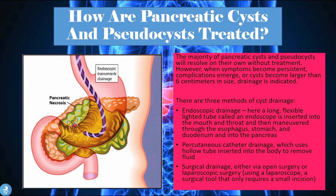There are three main methods of cyst drainage. The first is endoscopic drainage, where a long flexible lighted tube called an endoscope is inserted through the mouth, maneuvered through the esophagus, stomach, and duodenum into the pancreas to puncture, suction, and drain the cyst. The second is percutaneous catheter drainage, using a hollow tube inserted into the body to remove the fluid. The third is surgical drainage, either via open surgery or laparoscopic surgery using a laparoscope, which requires only a small incision.